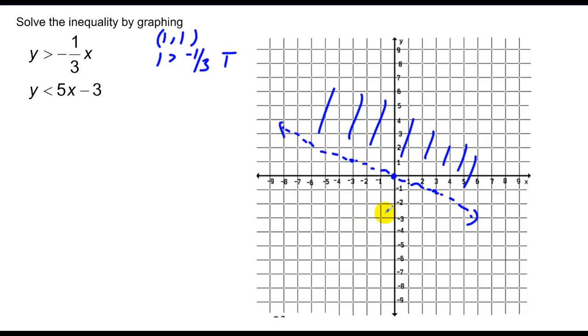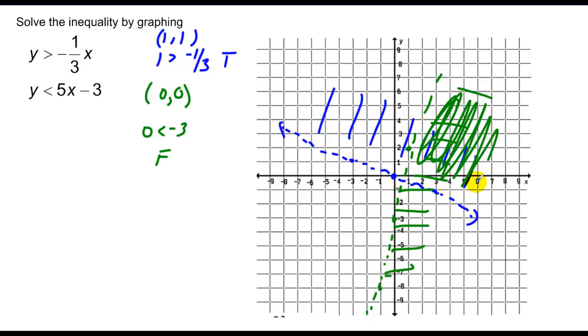Second one, I go down 3, up 5 over 1, dotted line once again. You'll notice 0, 0 is not part of the graph, so I can use that as my sample and get 0 less than negative 3, which is false. So if I use 0, 0, I need to shade the other side, my double shaded region is over here.